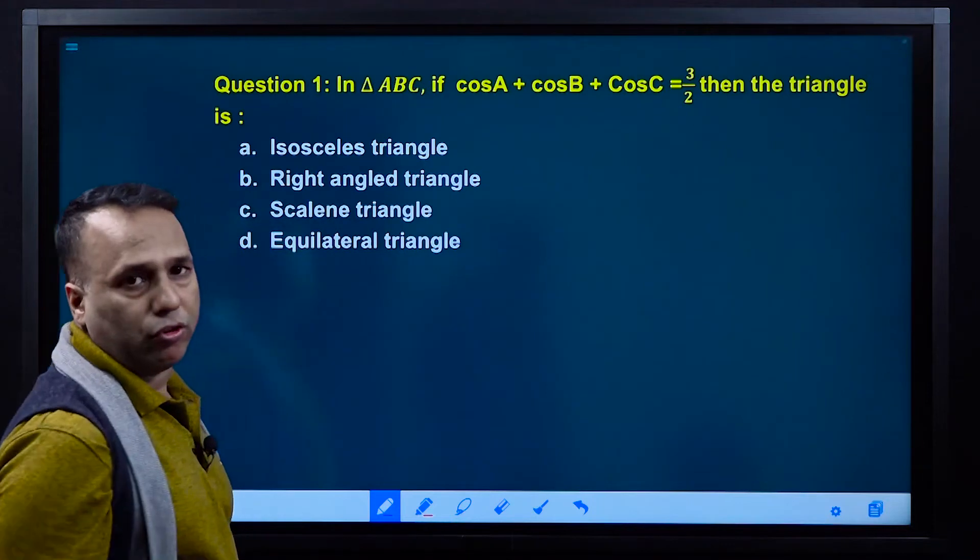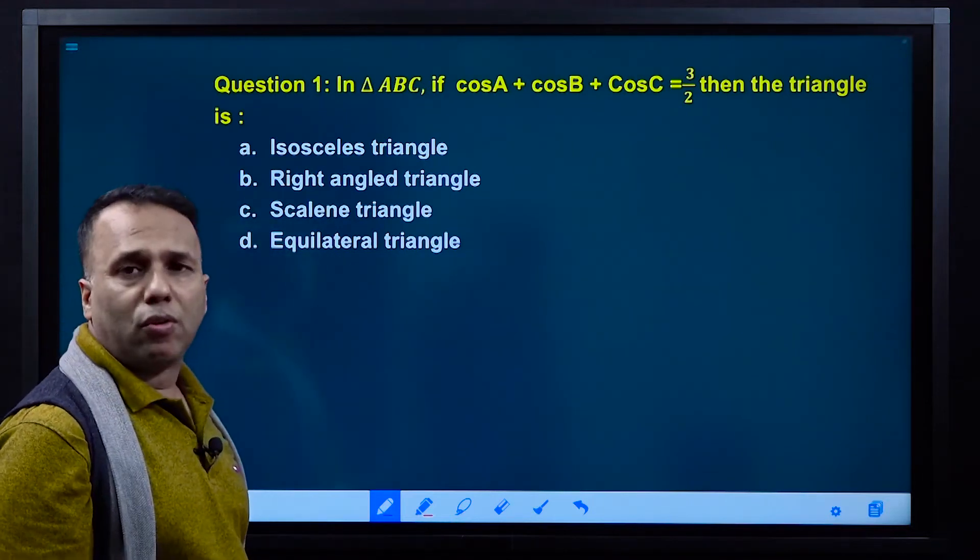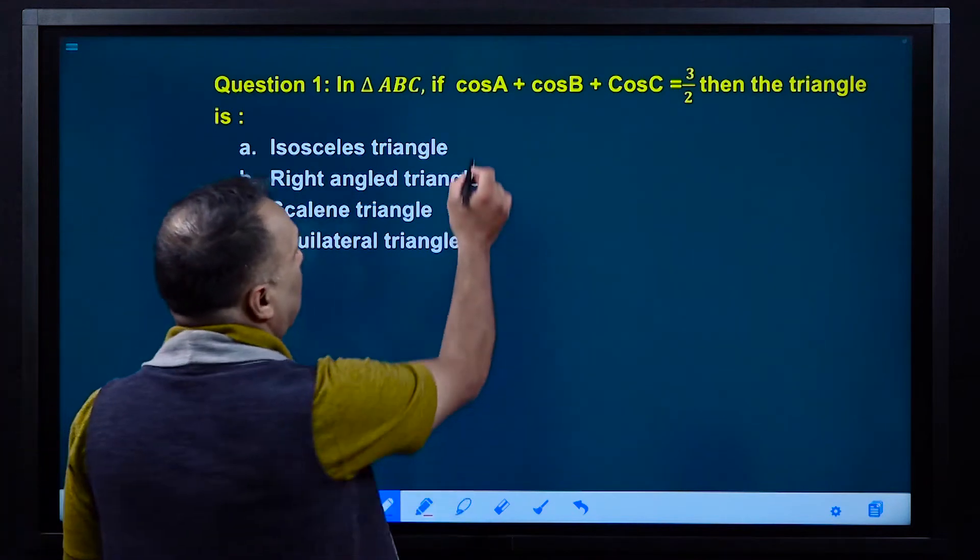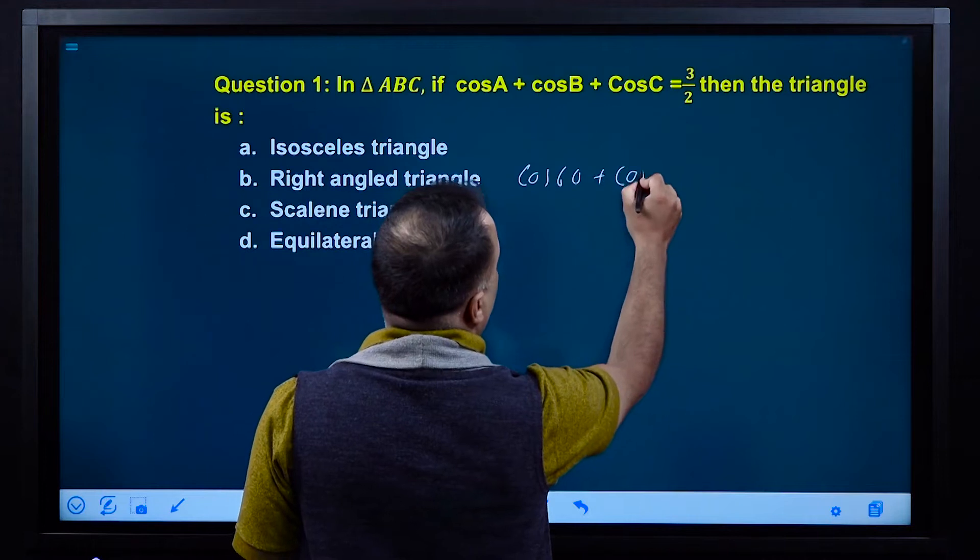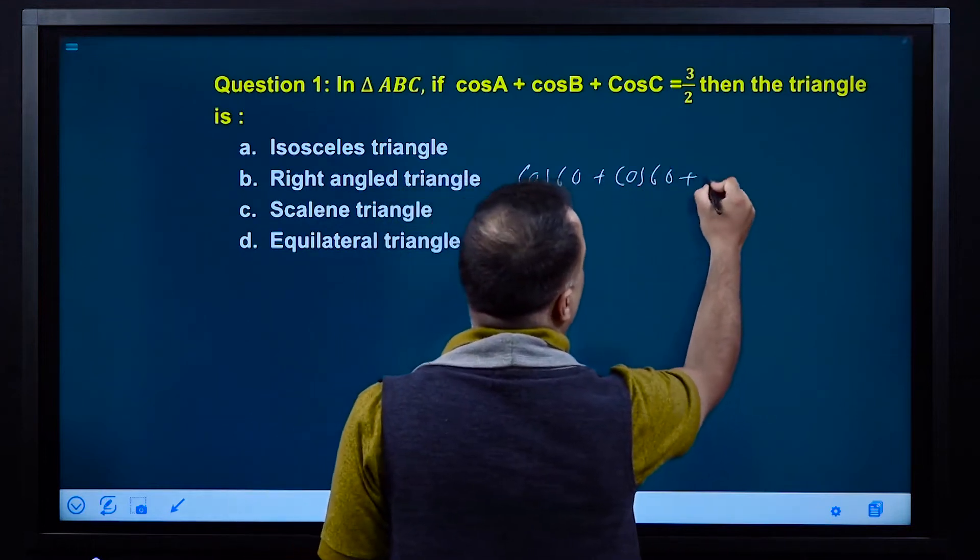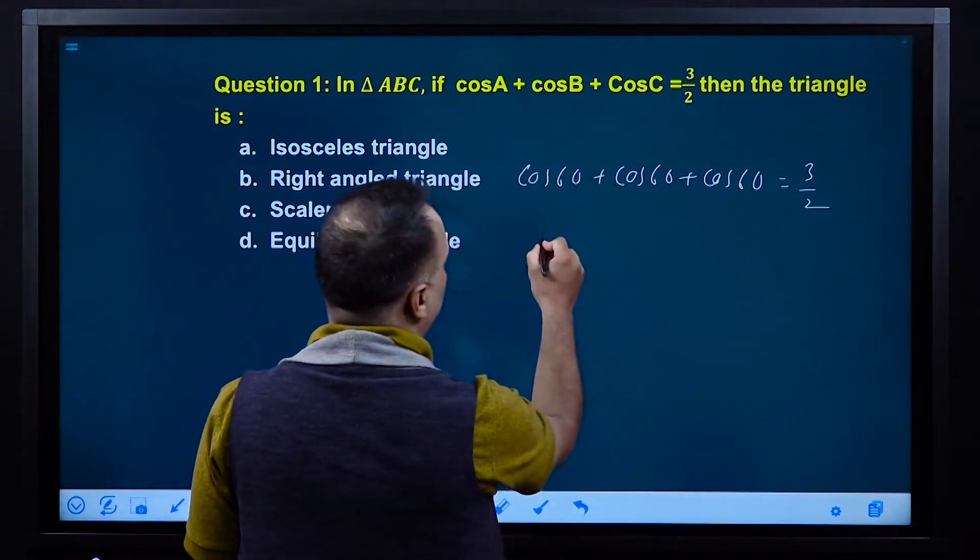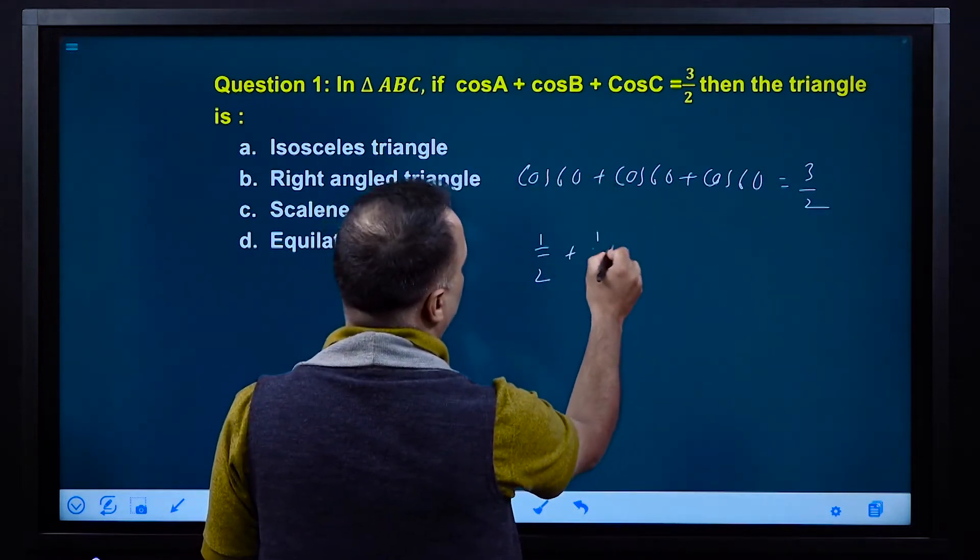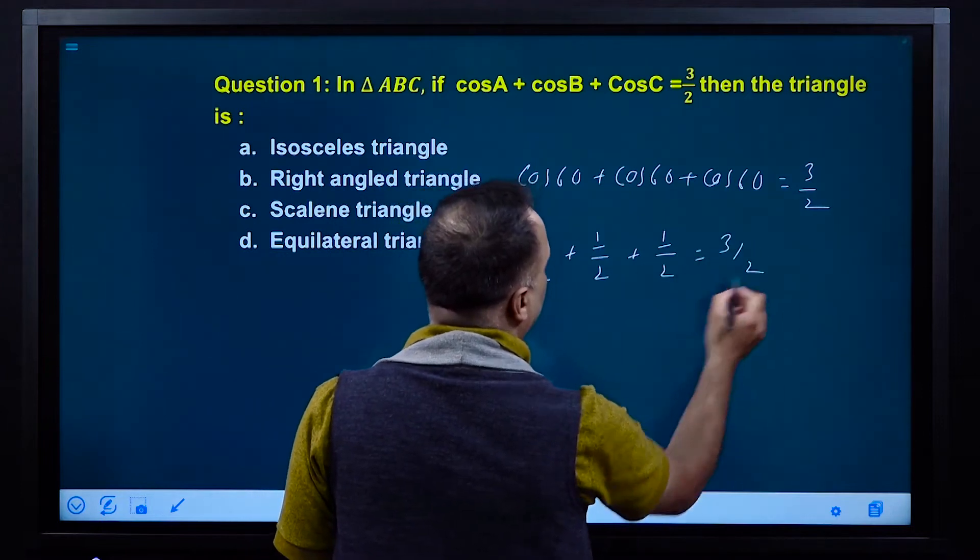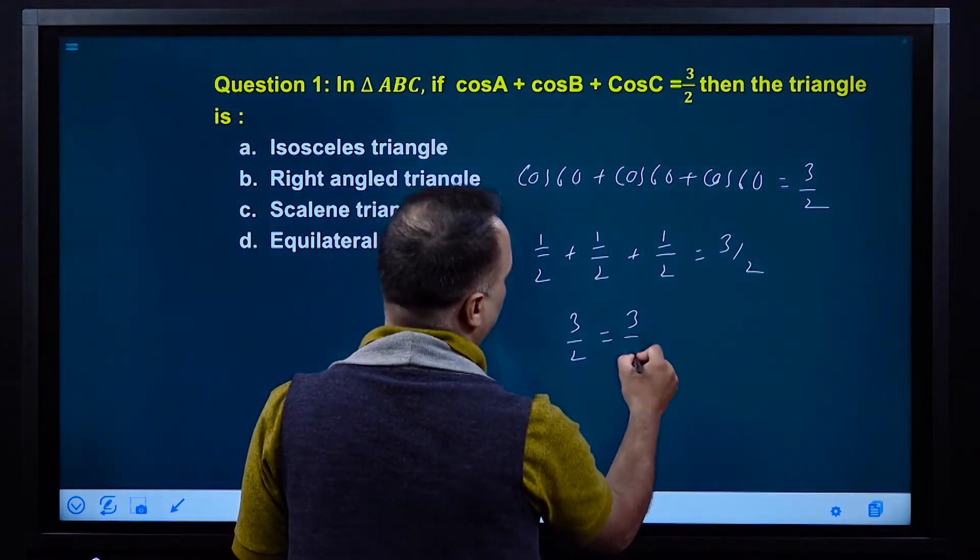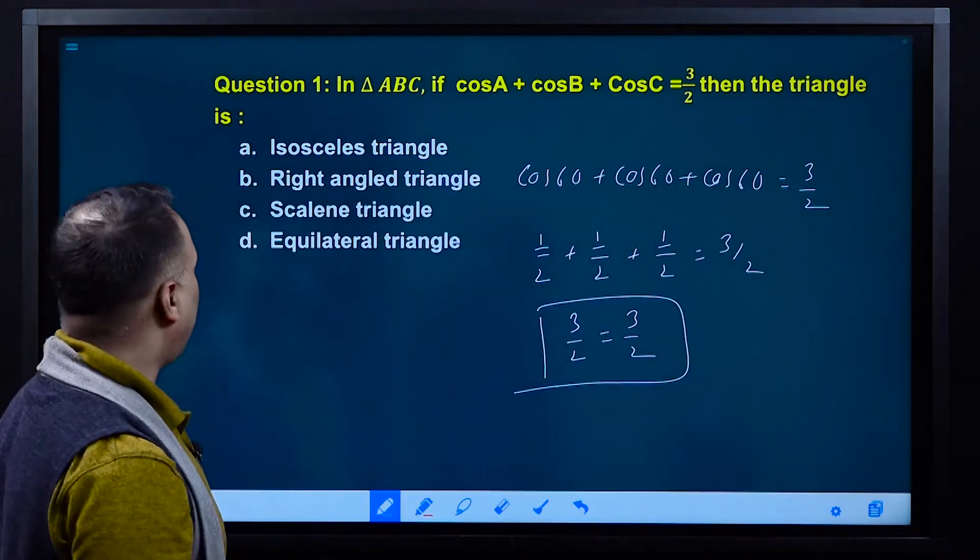I can check the equilateral triangle in option D. In an equilateral triangle, each angle is 60 degrees. So 60, 60, 60. Cos 60 is 1/2, 1/2, 1/2. Adding them: 1/2 + 1/2 + 1/2 equals 3/2. Hence, 3/2 equals 3/2, so the triangle is equilateral.